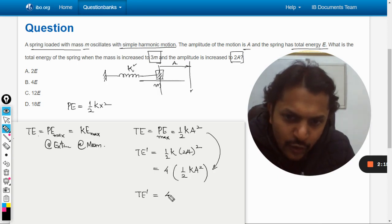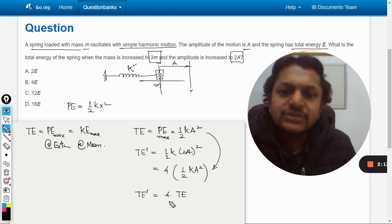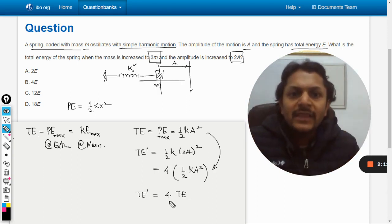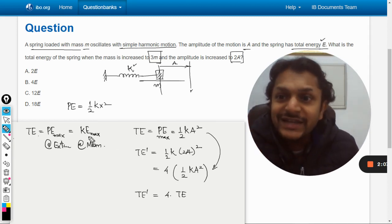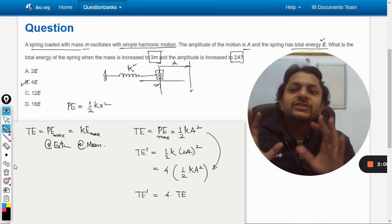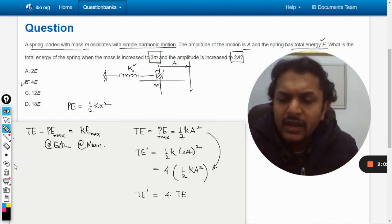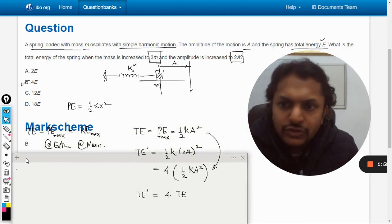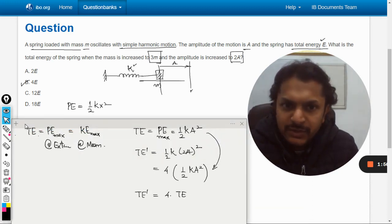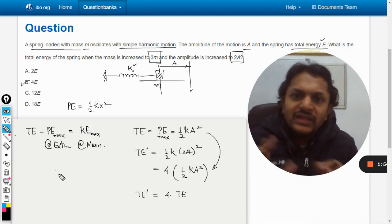So it means that the total energy now is four times the earlier total energy. Now earlier the total energy was given by capital E, so in this case it becomes 4E. So this is the correct answer. Now let us check it from the mark scheme also. Yes, you can see the answer given is B.